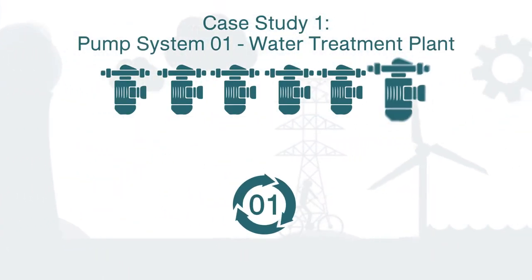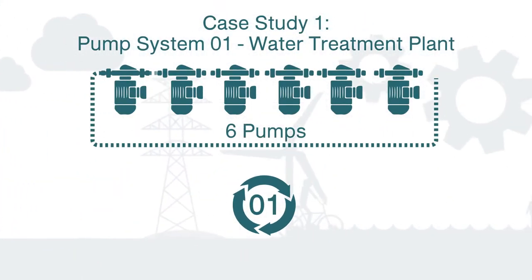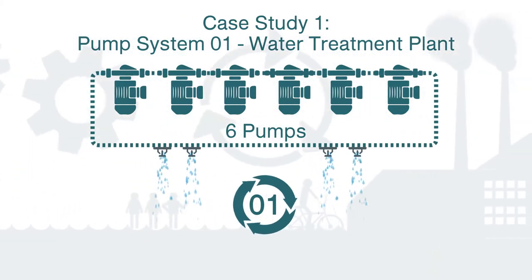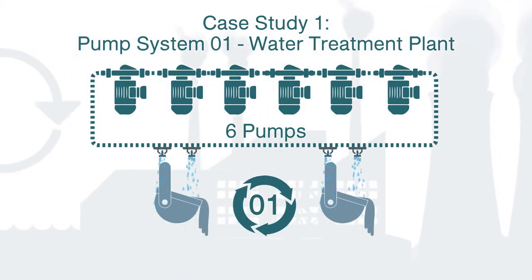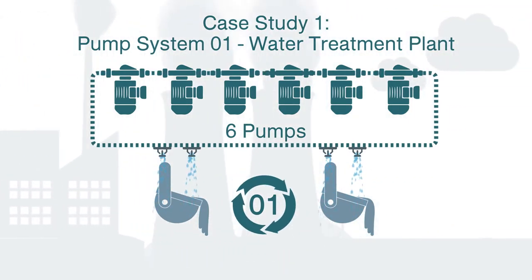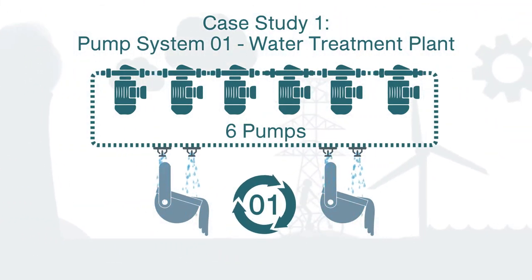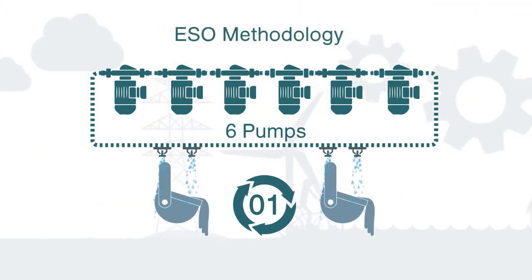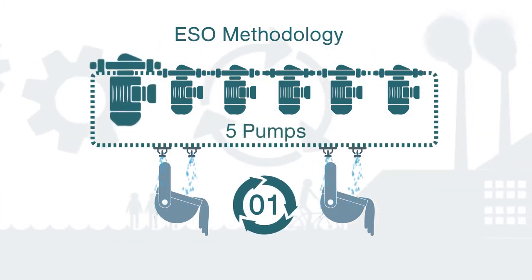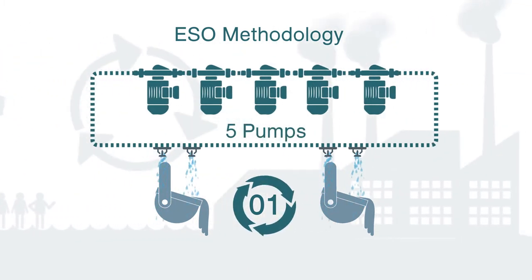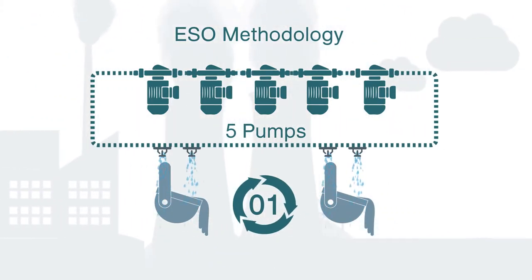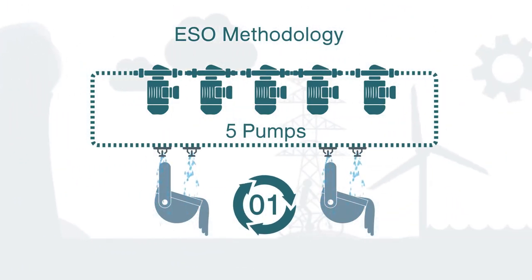Pump system 01 is a closed-circuit cooling system supplying cooling water at a constant pressure to the shells of the melt shop's continuous furnaces. Through the application of the ESO methodology on pump systems, the plant was able to turn off one of the pumps, and now runs only five pumps with no throttling.